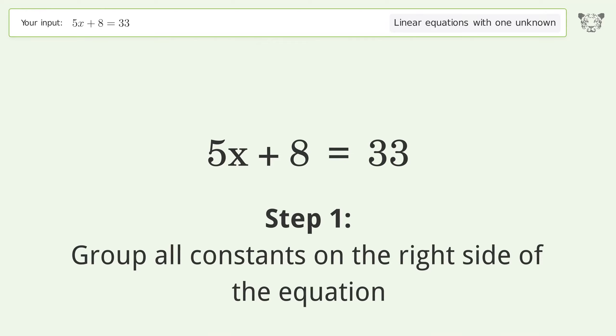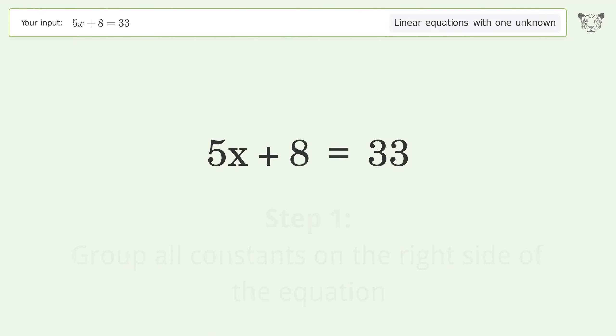Group all constants on the right side of the equation. Subtract 8 from both sides. Simplify the arithmetic.